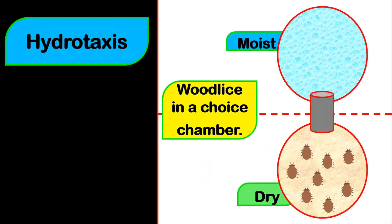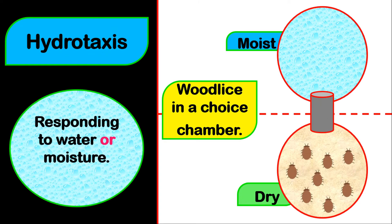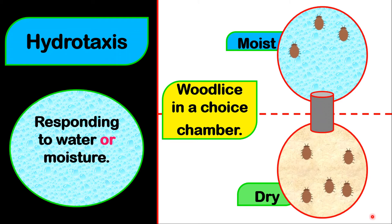Now let's look at hydrotaxis behavior. Hydro is responding to water or moisture. For example, woodlice in a choice chamber — which is an apparatus that gives choices — will be given the choice between a moist area and a dry area. Over time, most of the woodlice will end up in the moist area because they prefer moist conditions, and so woodlice display positive hydrotaxis behavior.